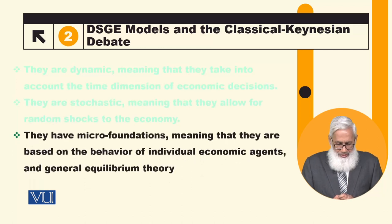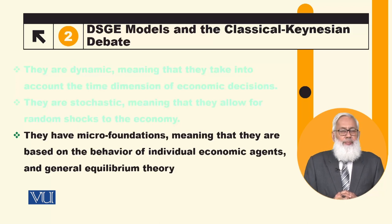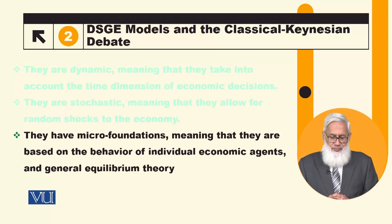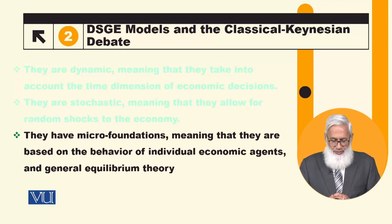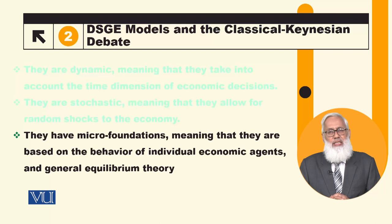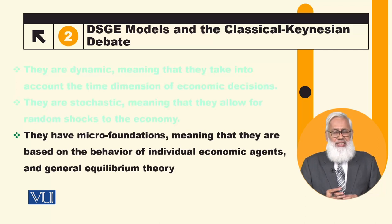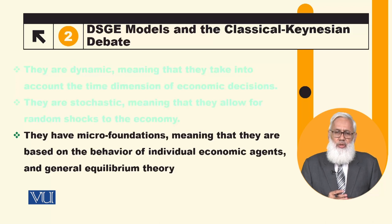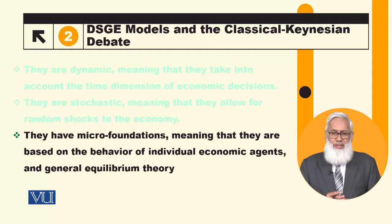These models are based on microeconomic foundations, meaning that they are based on the behavior of individual economic agents and general equilibrium theory. Three types of agents are consumers, firms, and government — these three are our major economic agents.